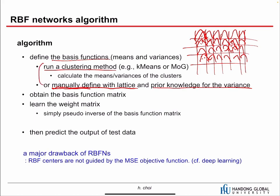Alternatively, you can use a clustering method. Once the basis functions are defined, we have a basis function matrix — applying those basis functions to the data samples gives us the matrix. We then learn the weight matrix using pseudo-inverse. If we have multiple outputs the weight is a matrix; for a single output variable, w is just a vector.